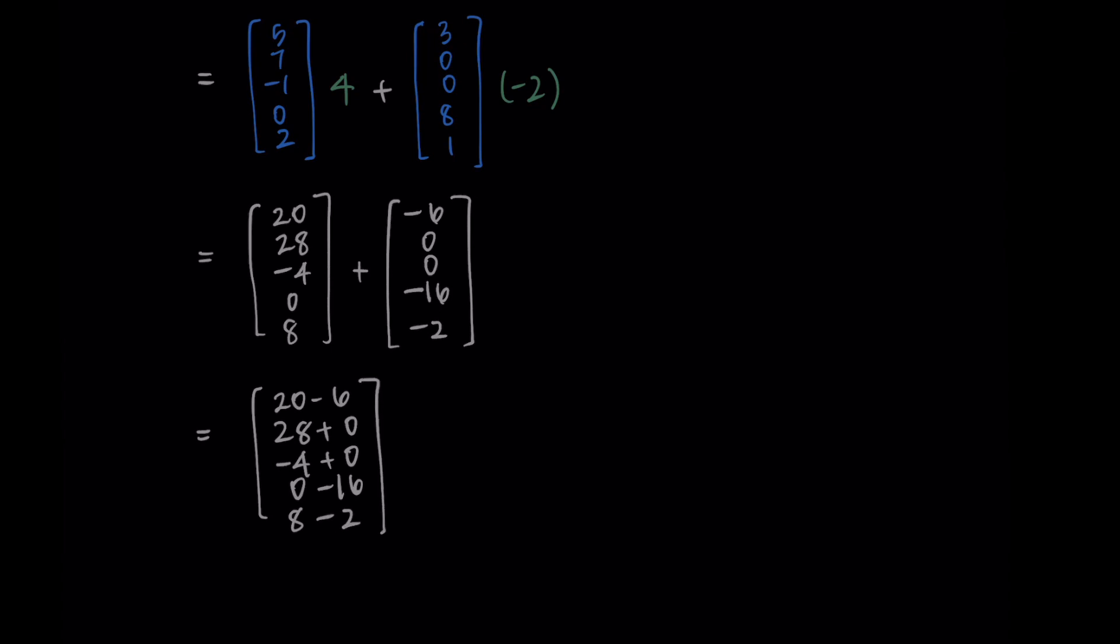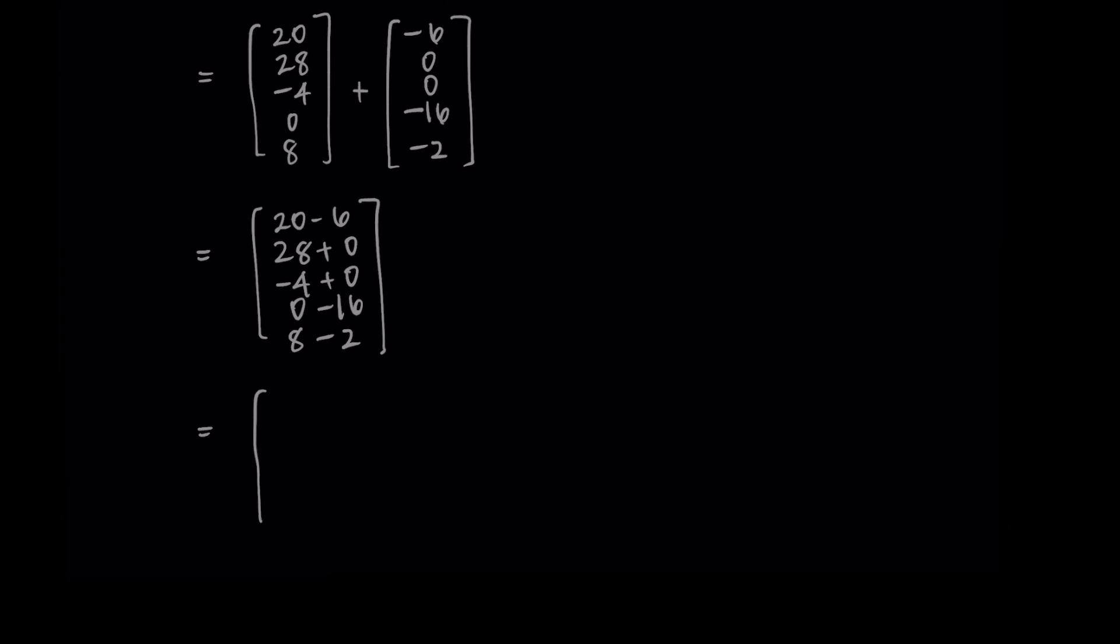So now I just simplify and I get my final answer. So I'm getting 14, 28, negative 4, negative 16, and 6. And there we go. So this is a 5 by 1 matrix as we expected and this is our matrix product.